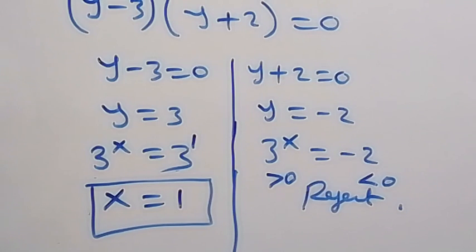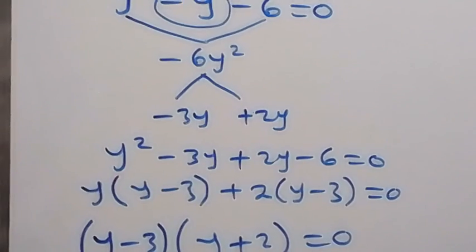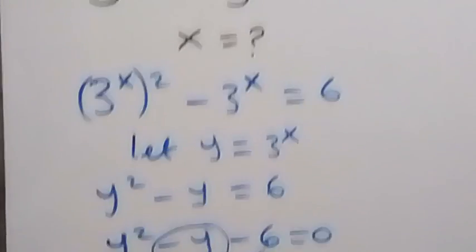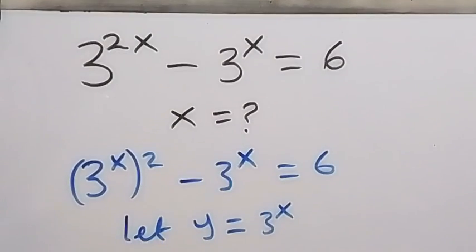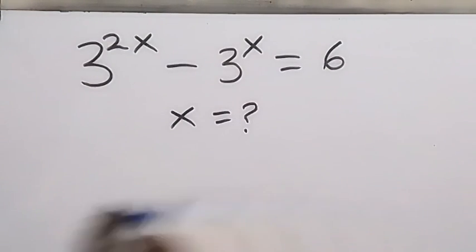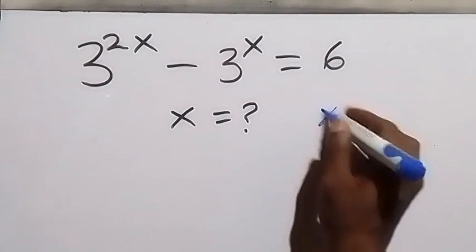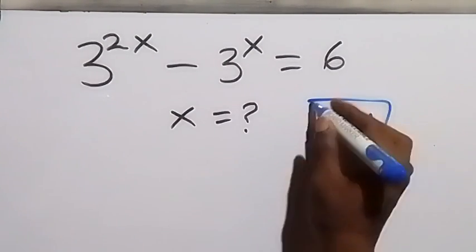Now we can check to confirm if this solution satisfies the given problem. We have 3 raised to power 2x minus 3 raised to power x equals to 6, and we got x equals 1. So let's put x equals 1 here and check. 2 times 1 is 2. We have 3 squared minus 3 raised to power 1, which is 3, equals to 6.